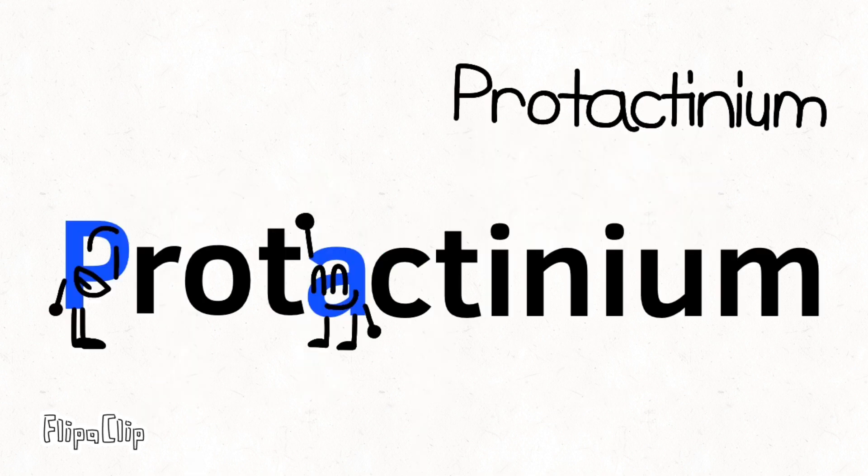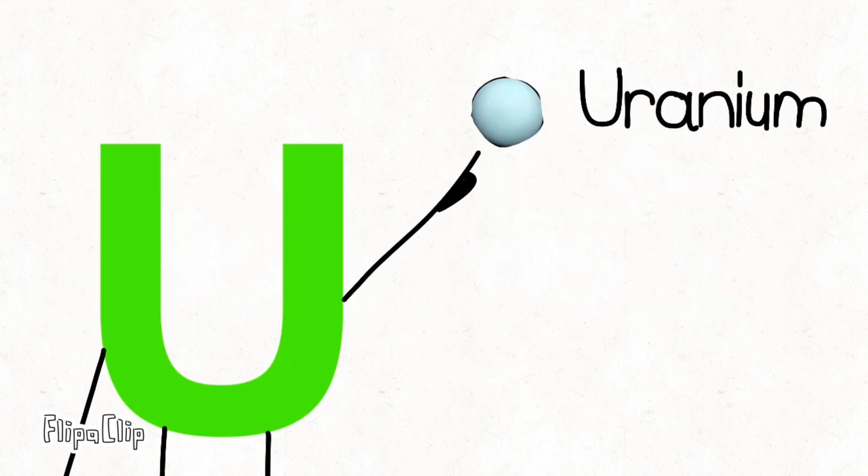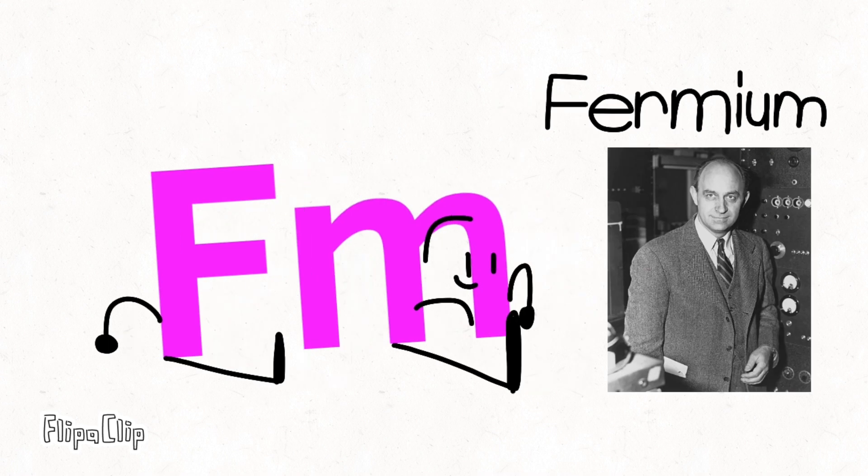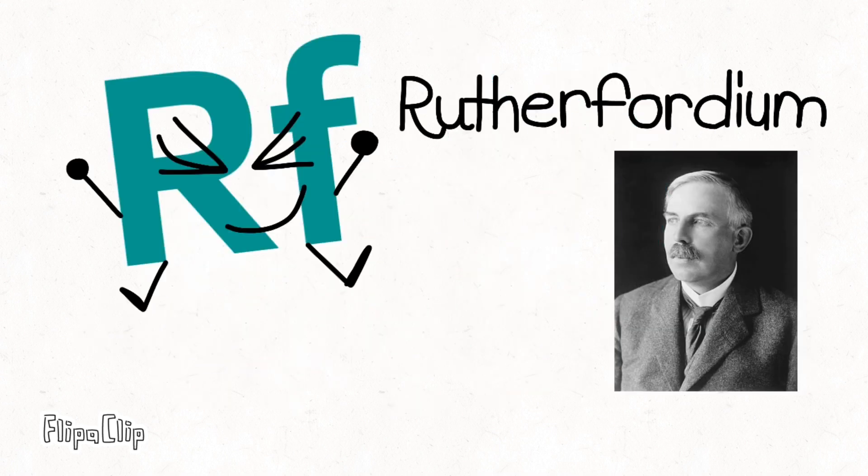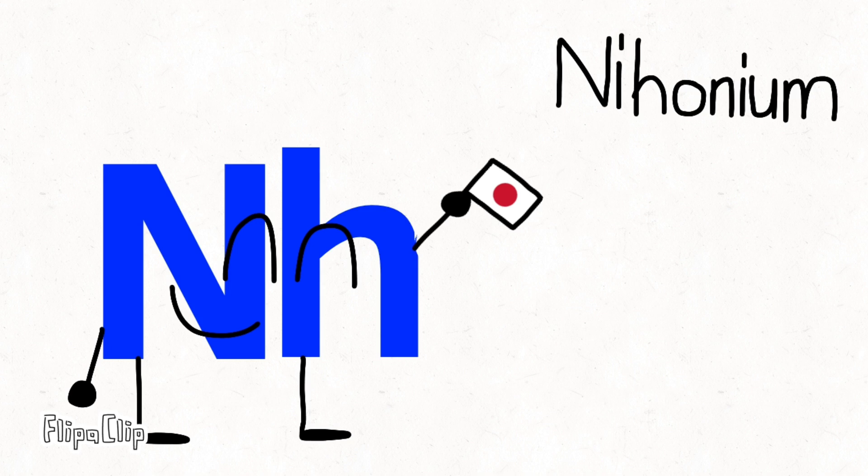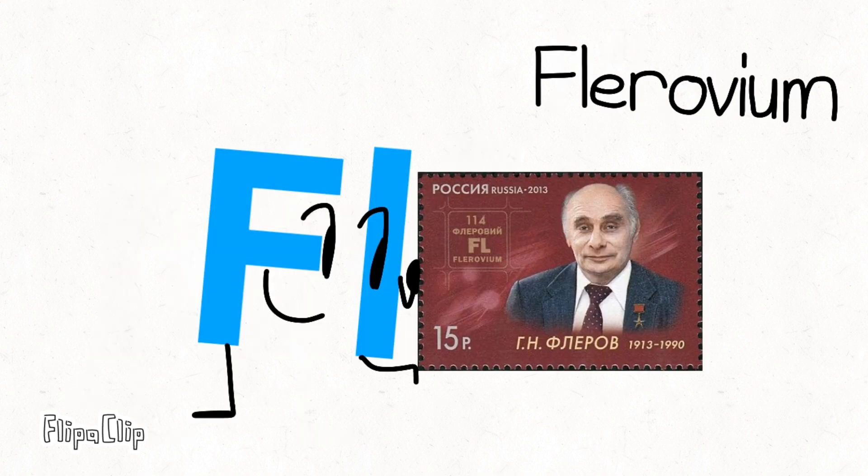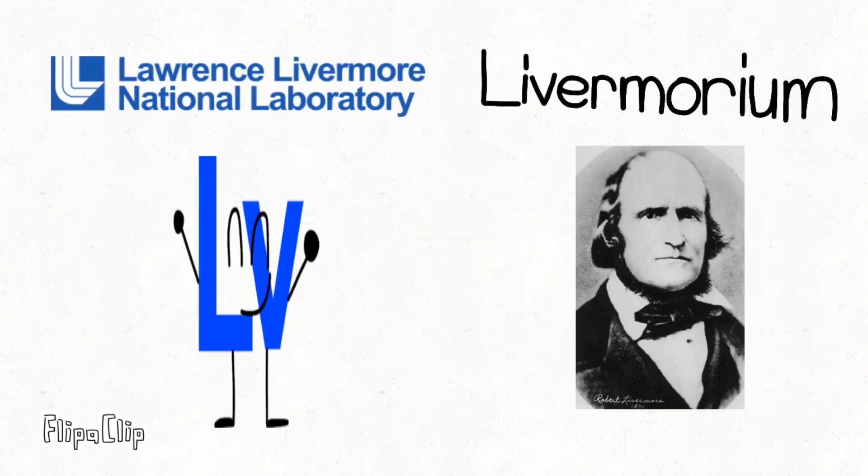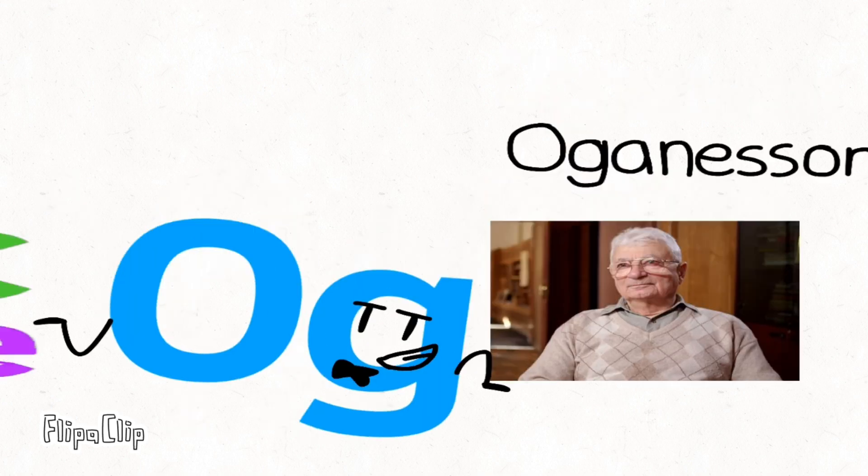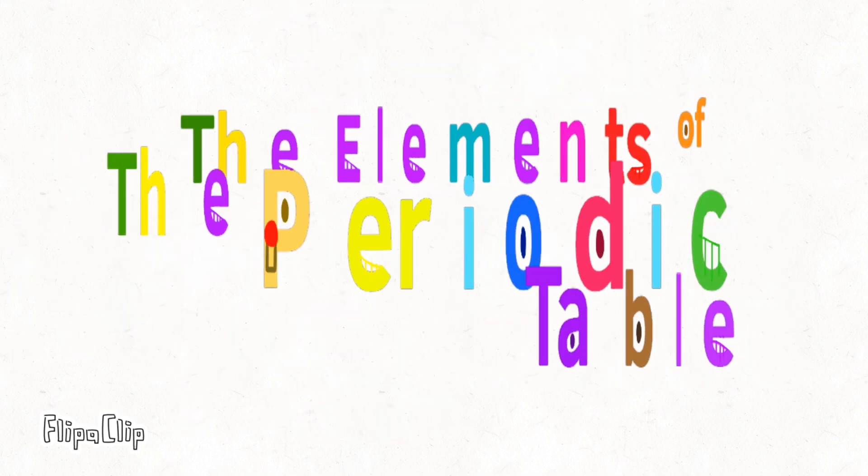Actinium, Thorium, Protactinium, Uranium, Neptunium, Plutonium, Americium, Curium, Berkelium, Californium, Einsteinium, Fermium, Mendelevium, Nobelium, Lawrencium, Rutherfordium, Dubnium, Seaborgium, Bohrium, Hassium, Meitnerium, Darmstadtium, Roentgenium, Copernicium. And then we're done!